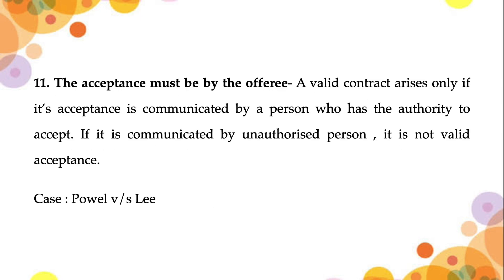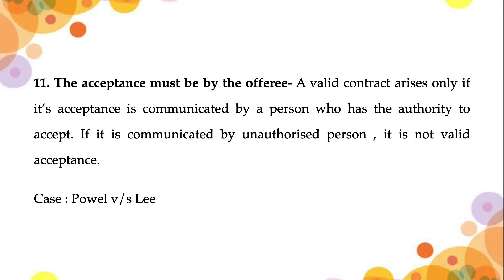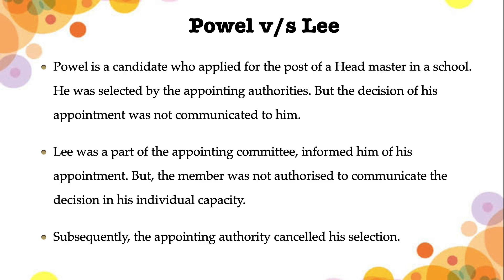In this case, the offeree is Powell, but the offeror is the entire selection committee. Until they give him an offer letter with all employment conditions, and Powell gives his acceptance, there is no valid contract. Since Lee communicated the decision in an unauthorized manner, the court dismissed the case — the selection committee was not legally responsible. This confirms that acceptance must be by the offeree.